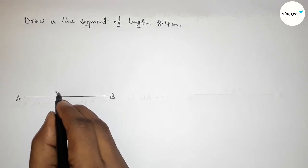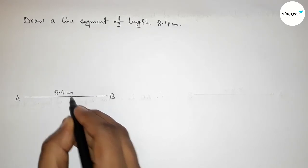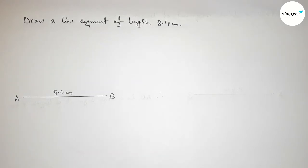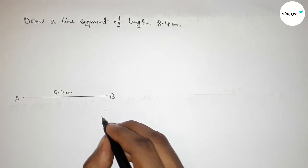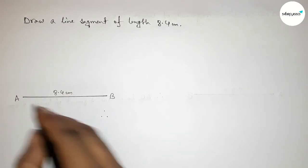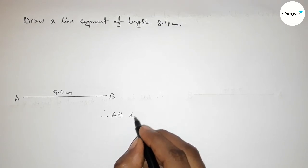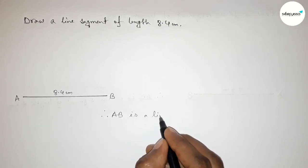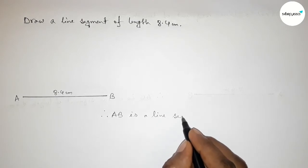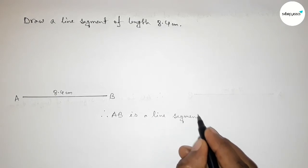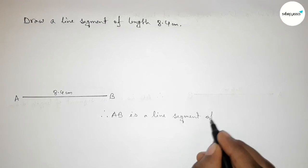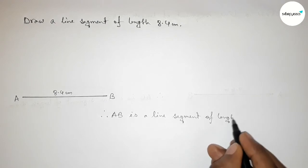So AB is a line segment of length eight point four centimeter. Therefore, with the help of a scale, you can draw this line by this way.